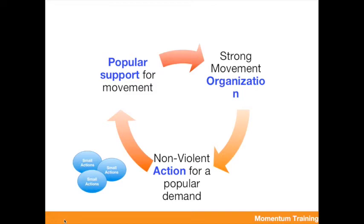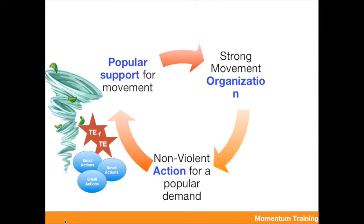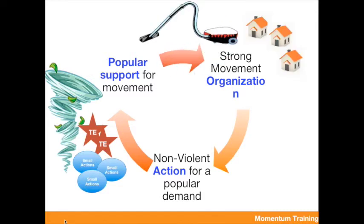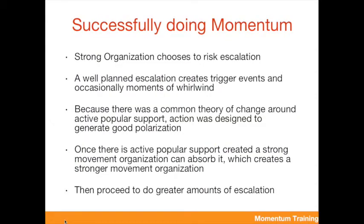Let's go back to the cycle of momentum. You do non-violent action for a popular demand, you absorb as much as you can, and then you put people in voluntary simplicity or create organizing teams to do the cycle again. The cycle starts when a strong organization chooses to risk escalation. Then you do a whirlwind escalation that creates a trigger event. If you designed it looking for a popular issue that activated popular support, it generates good polarization, which creates popular support — then you absorb that.